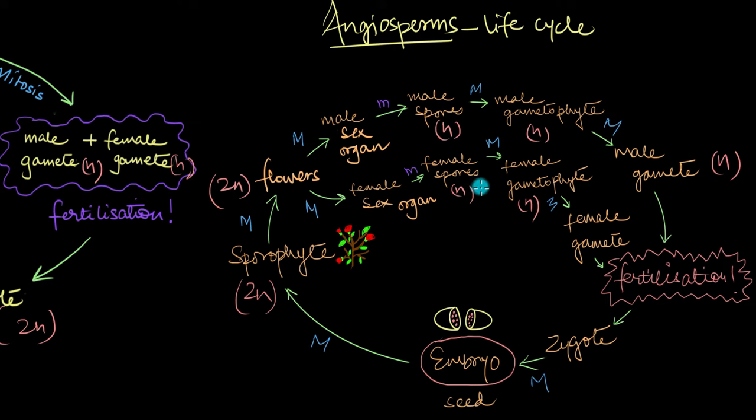The female sex organ produces haploid female spores, which develop into the female gametophyte with the female gamete via mitotic divisions. When these gametes come in contact, they fuse and undergo fertilization, giving us a diploid zygote. This zygote develops into an embryo within a seed via mitotic divisions, and when the seed gets the right conditions it germinates into a new sporophyte, and the cycle continues.